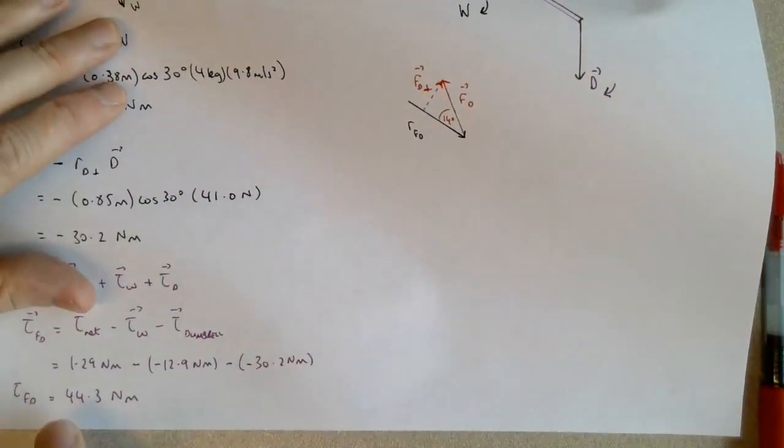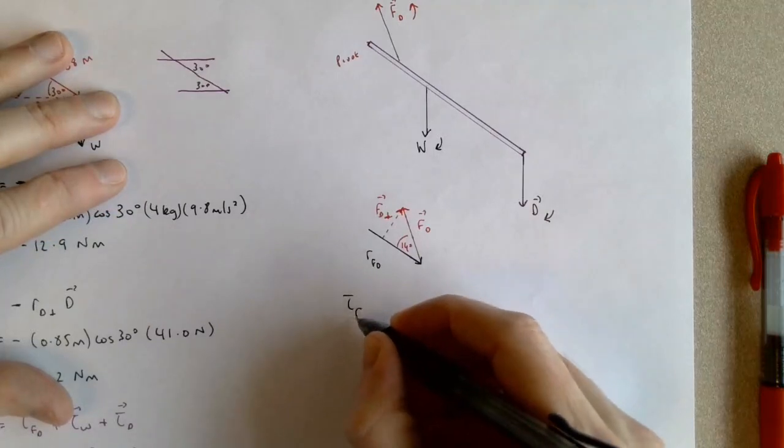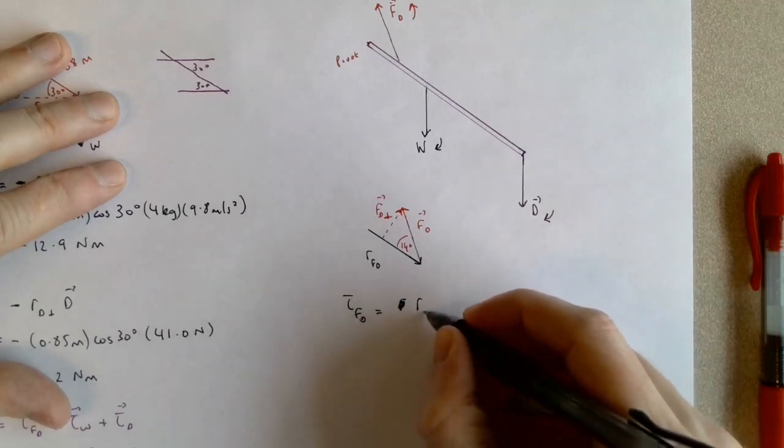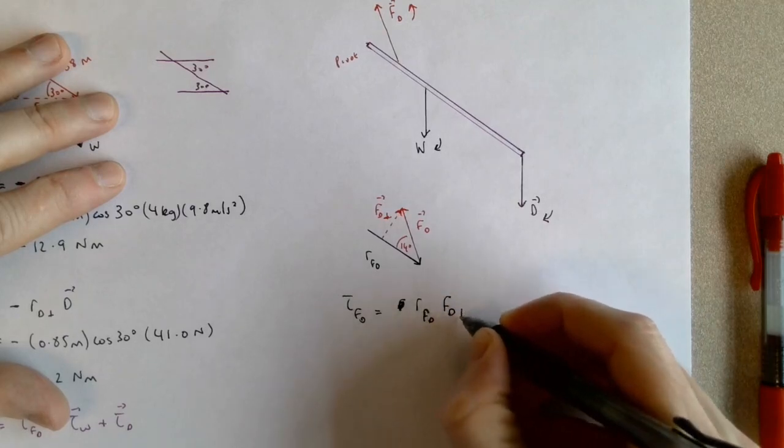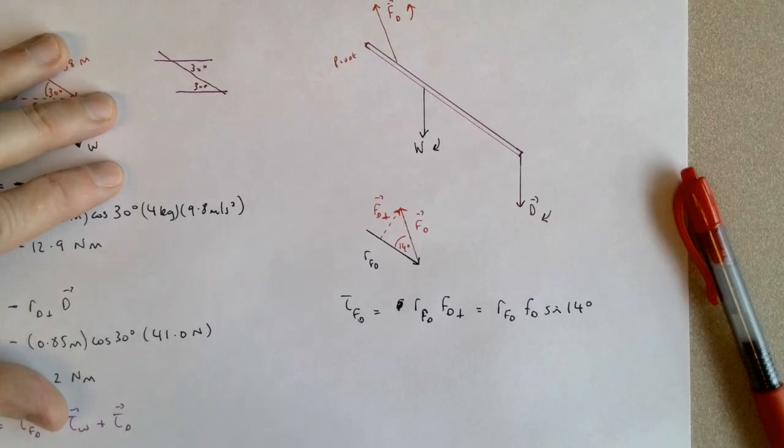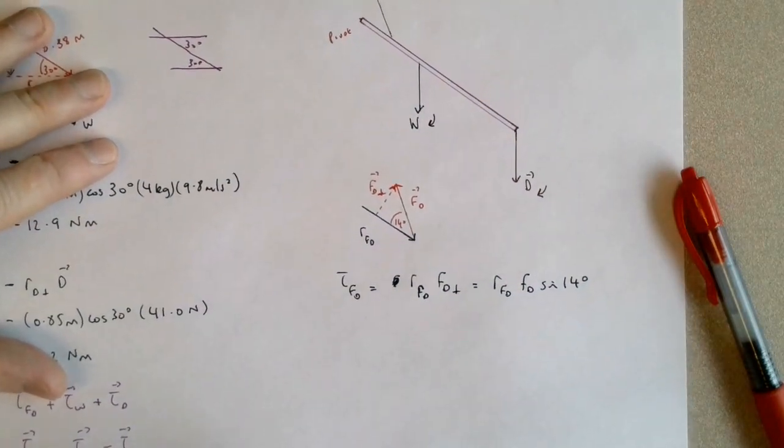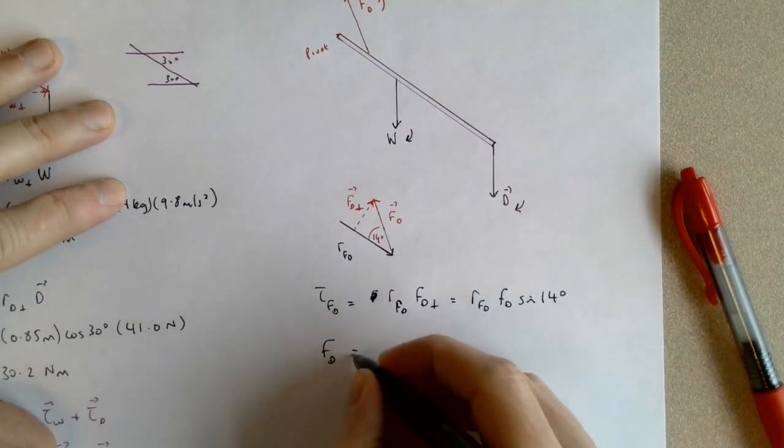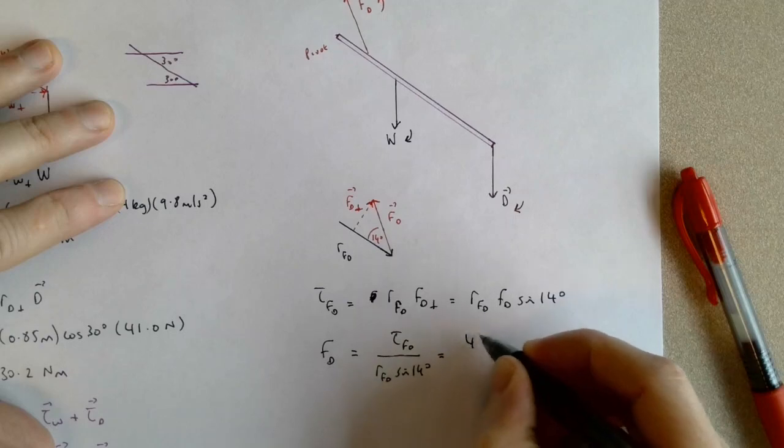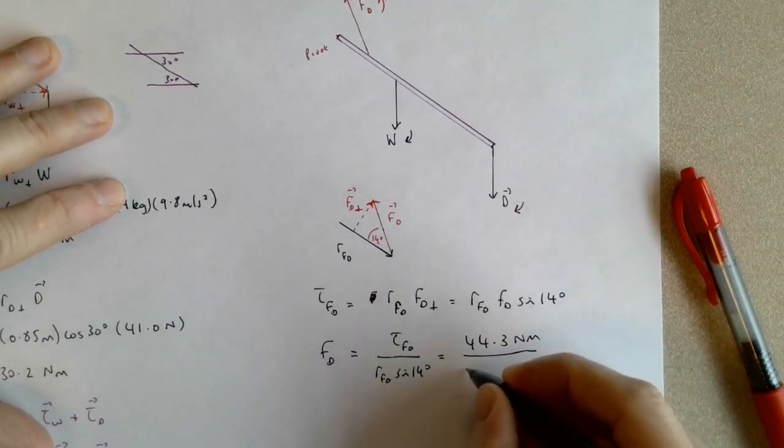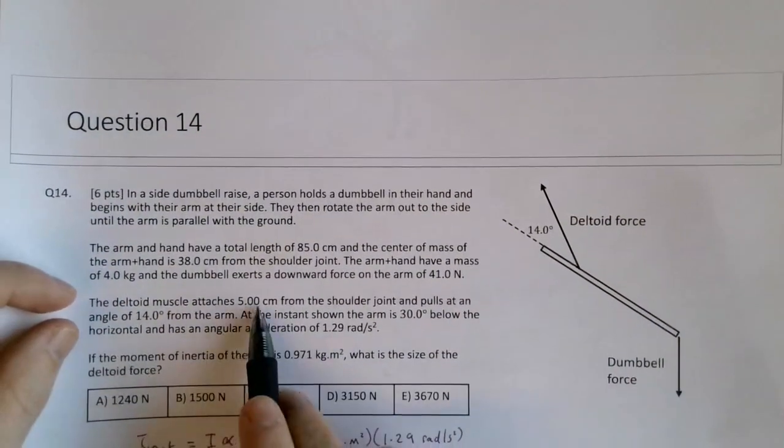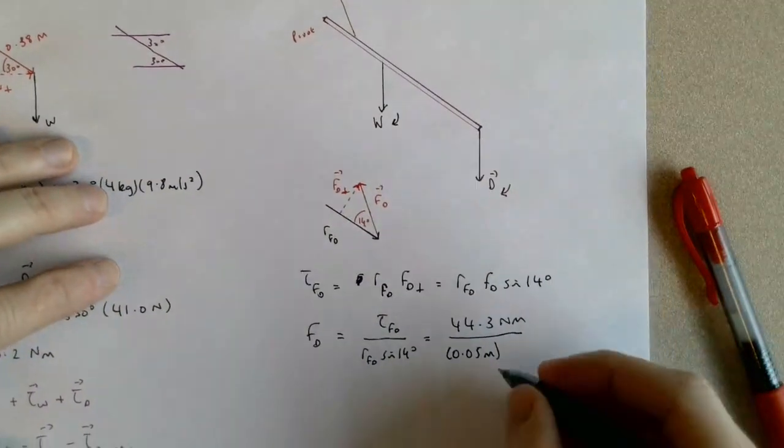From down over here, I'm going to write that the torque of F deltoid is positive. I know that it's going to be R FD times F D perpendicular, which is R FD times F D times the sine of 14 degrees. And we know that this all equals 44.3 Newton meters. So my F D will be equal to my torque F D divided by R FD times the sine of 14 degrees. This is 44.3 Newton meters divided by 0.05 meters. That's 5 centimeters here. Times the sine of 14 degrees.